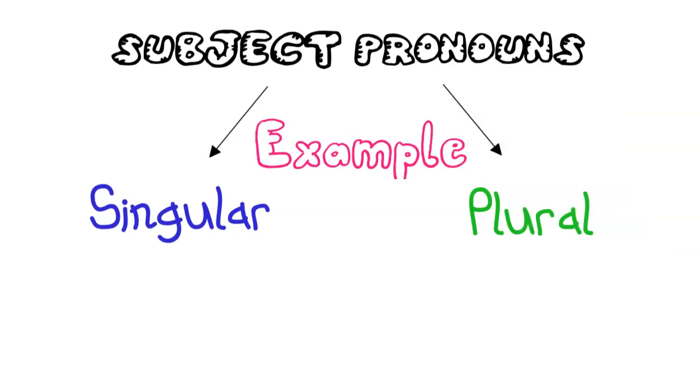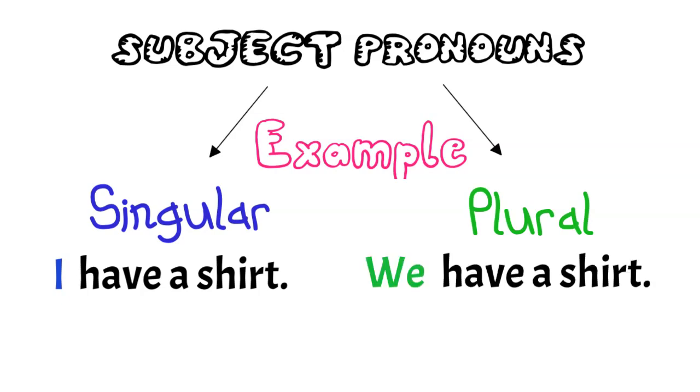Here are some examples. Singular form: I have a shirt. Plural form: We have a shirt.